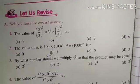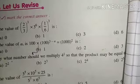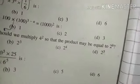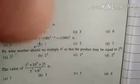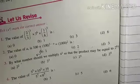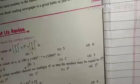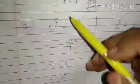Next, question number 3: By what number should we multiply 4² so that the product is equal to 2⁸? That means we need to multiply 4² by some number to get 2⁸. To find that number, we divide 2⁸ by 4².